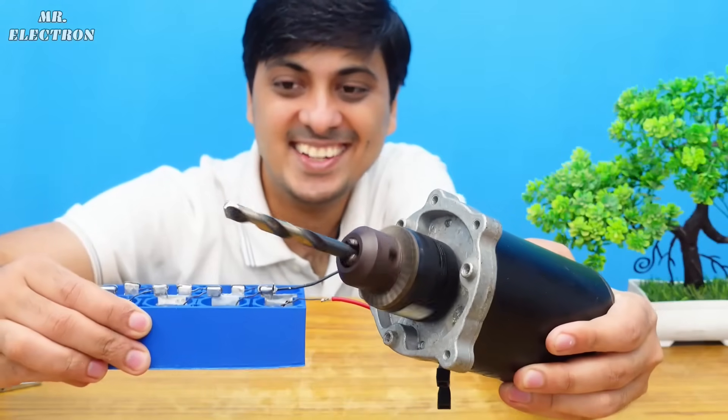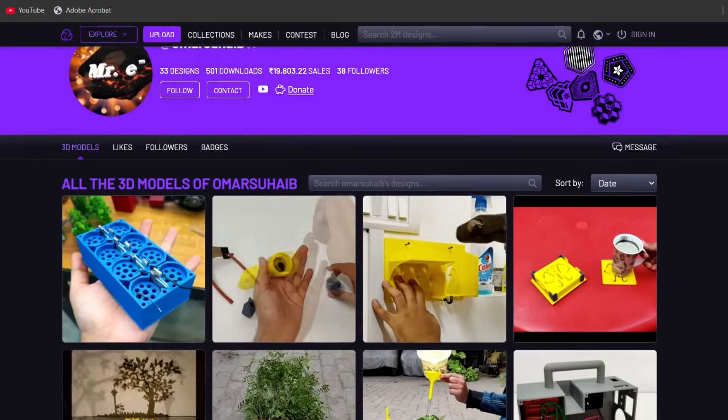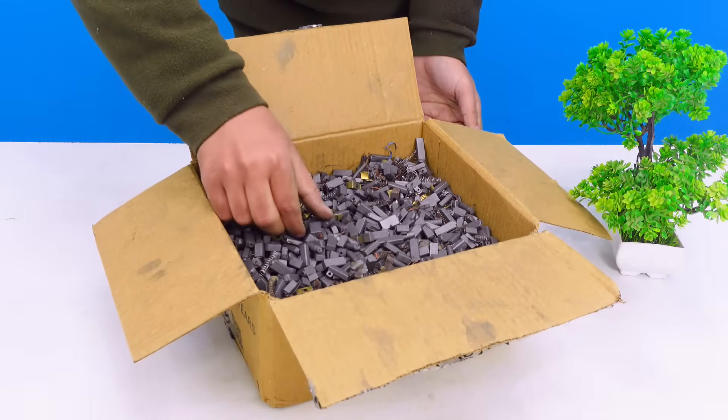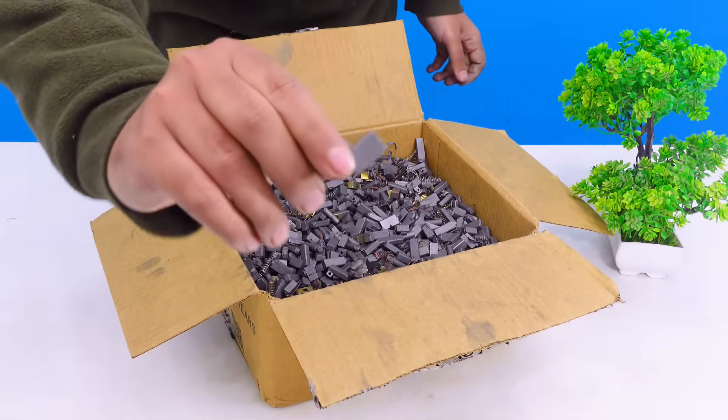Please note that the previous video link for the air battery and the 3D print STL files will be provided in the description. Now I have these many carbon brushes and from this stack I'm going to choose this one.